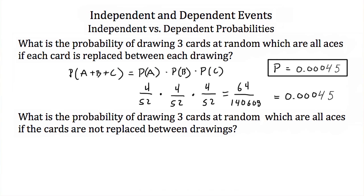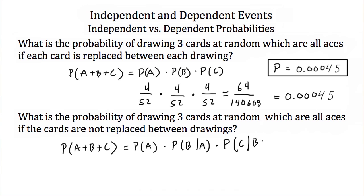Now what is the probability of drawing three cards at random which are all aces, if the cards are not replaced? The probability of A and B and C all occurring equals the probability of A, times the probability of B given A, times the probability of C given B and A. The probability of A is 4 out of 52, because there are four aces and 52 cards. The probability of the second ace is 3 out of 51 — only three aces left and only 51 cards left. For the third drawing, there are only two aces left and only 50 cards left in the deck.